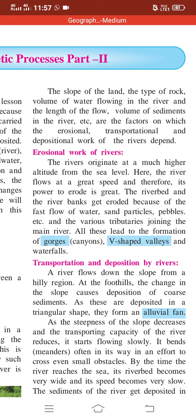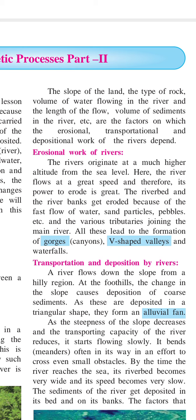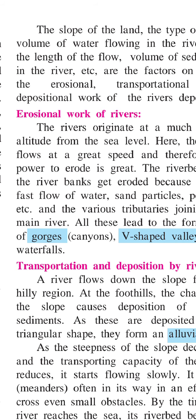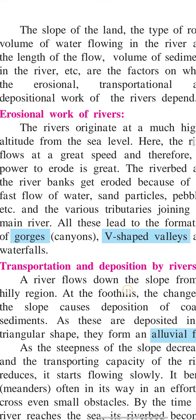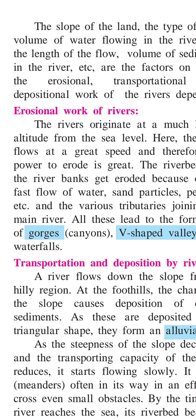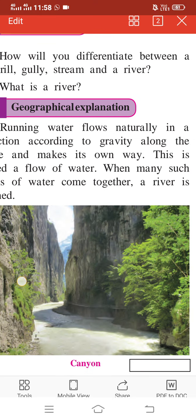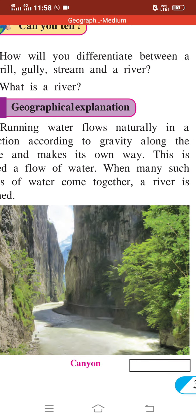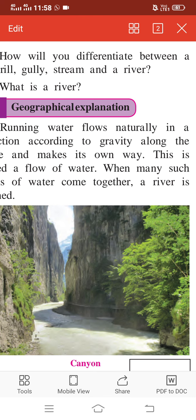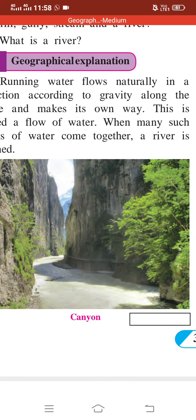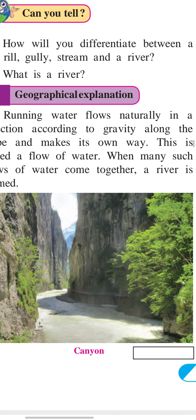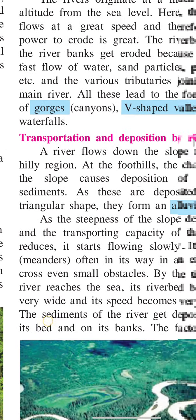The riverbed gets eroded because of sand particles and pebbles. Various tributaries joining the rivers all lead to the formation of gorges or canyons. You can see in this picture — it's called a canyon. Both sides of the river and the bed — three sides get eroded, and erosion takes place on these three sides, therefore it is called a canyon.